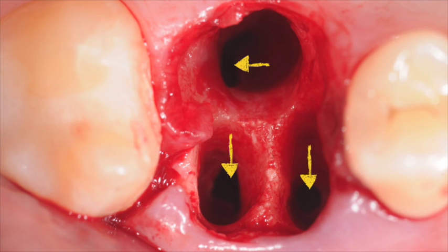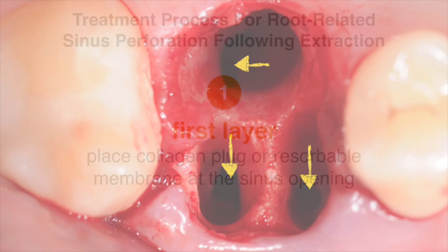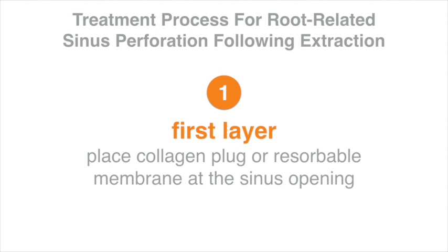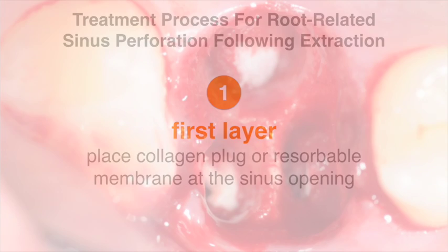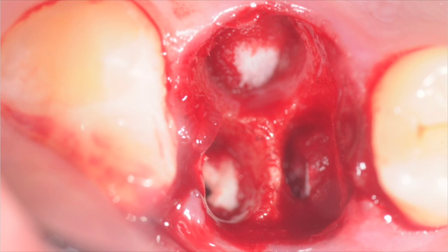The sinus perforation at this point is managed using a three-layered principle. The first layer involves careful placement of collagen plugs or a resorbable membrane at the junction of the root and the sinus opening. It's important to place the material carefully so it does not get displaced into the sinus.